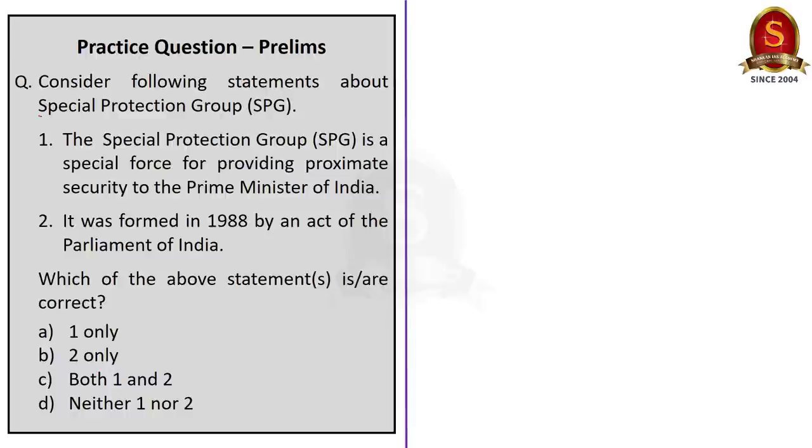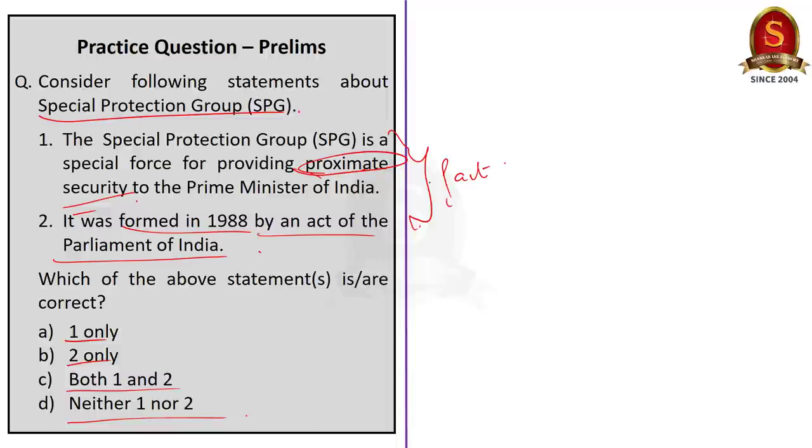See the next question. Consider the following statement about SPG. SPG is a special force for providing proximate security to the prime minister of India. Second statement is it was formed in 1988 by an act of the parliament of India. Which of the following statements are correct? One only, two only, both one and two, neither one nor two. See this is a factual question and we have discussed that SPG provides proximity security to PM, former PMs and their family members. And it was formed in 1988 by the act of the parliament. So both the statements are correct and our answer is option C both one and two.